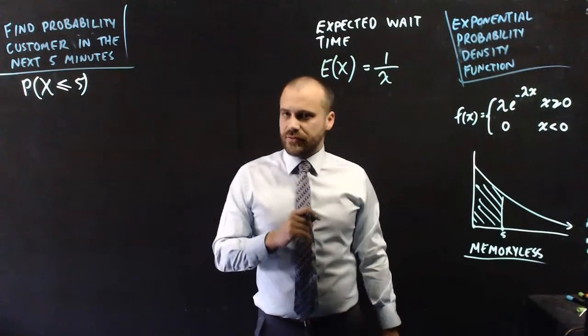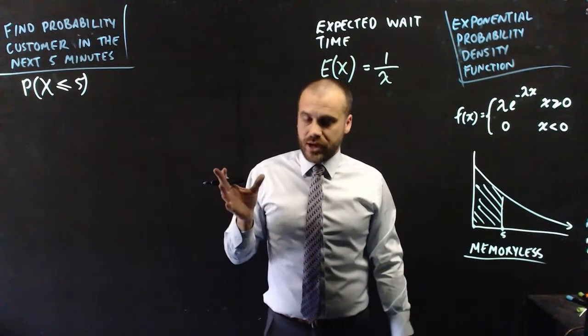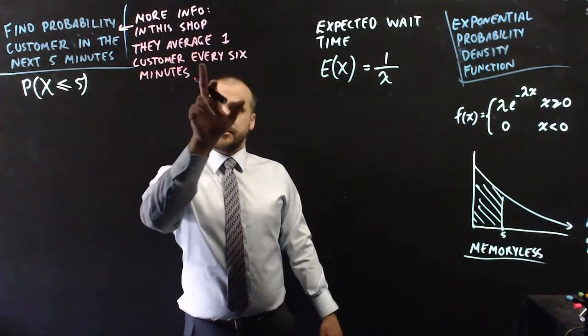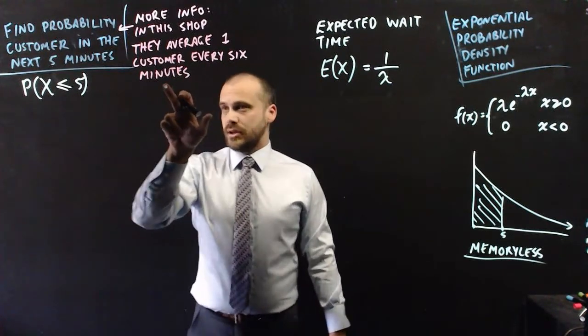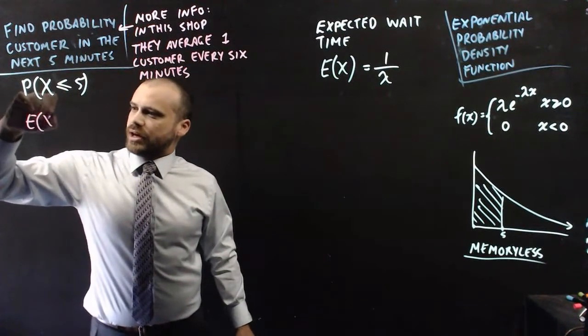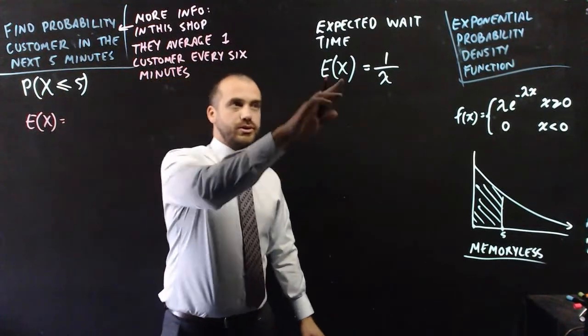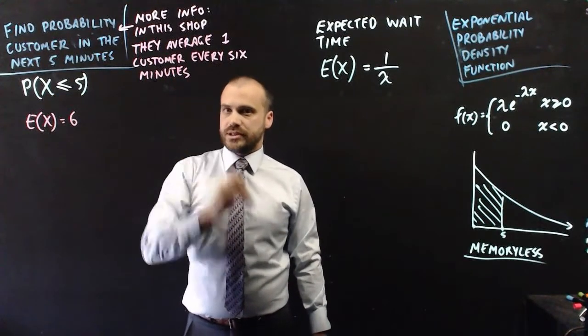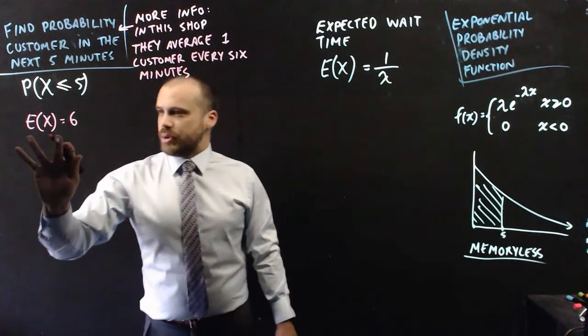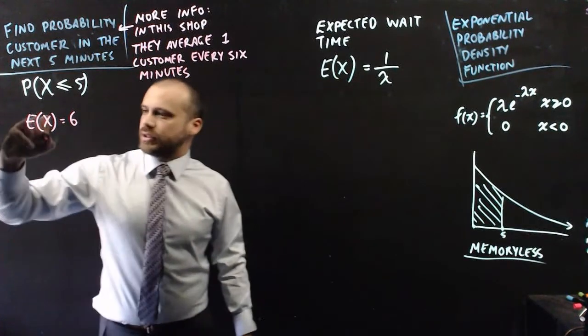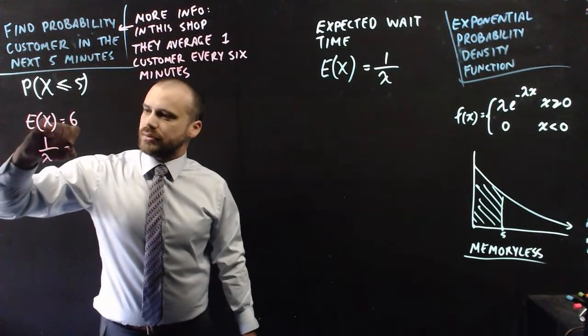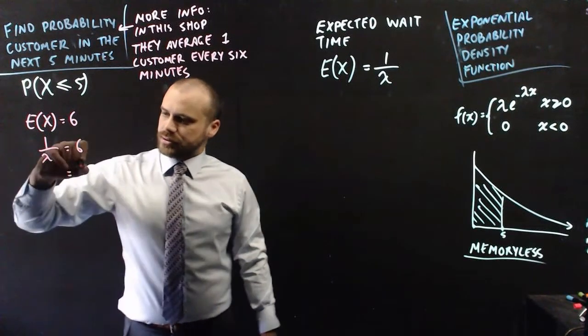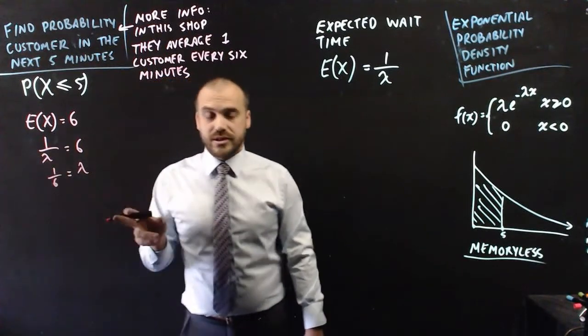All right. So let me give you one more piece of information here and then we can figure out who's going to win this bet. So in the shop we're talking about they average one customer every six minutes. All right. Let's go. We know that the expected value here is equal to six because they average one customer every six minutes. But we also know that the expected value is equal to one over lambda. So one over lambda equals six. And that means that lambda must be equal to one over six.